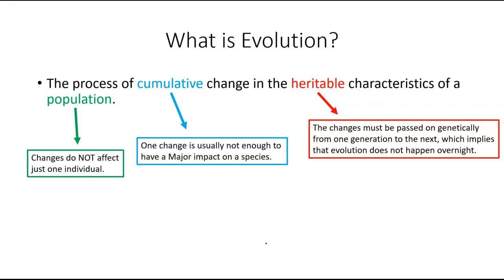One thing you need to understand is that individual organisms can't evolve — these changes do not affect one individual. One individual can adapt to their particular environment, and adaptation and evolution have a similar meaning to a lot of people, but evolution by definition is these small changes that are compounding genetically over time that can greatly impact not individuals, but species as a whole. Individual organisms can adapt and change and overcome adversities in their environment, but that's about it.